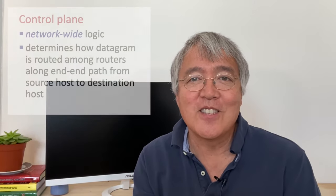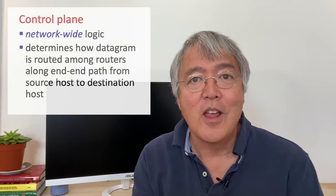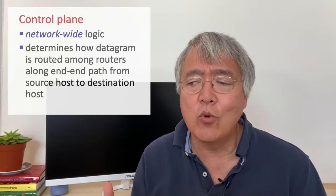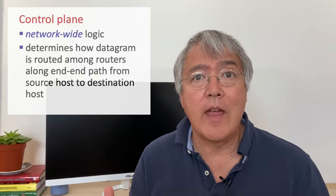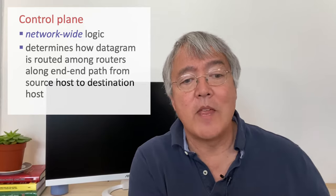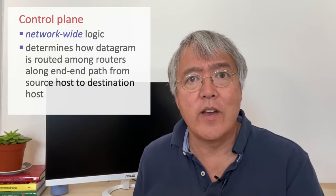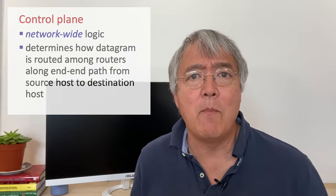The second part of the network layer that we're going to study is known as the control plane. The control plane is really about the network-wide view — the end-to-end view of getting packets from one edge of the network to the other, and the coordination and management of all the devices in the internet.